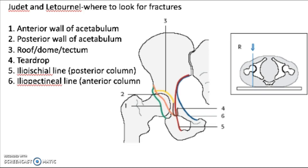The ilio-ischial line is the posterior column we just discussed. The iliopectineal line goes up from the brim of the top of the pelvis and the ilium down to the brim of the pubic bone anteriorly.